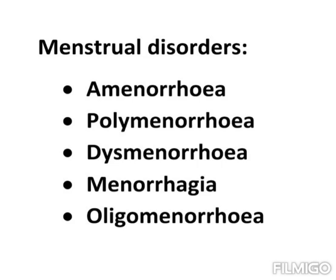Chronic pelvic inflammation by certain sexually transmitted diseases such as chlamydiasis or gonorrhea can cause inflammation in the uterus, causing polymenorrhea. So some sexually transmitted diseases are also responsible for polymenorrhea. Certain STDs such as chlamydiosis or gonorrhea can cause inflammation in the uterus causing polymenorrhea.